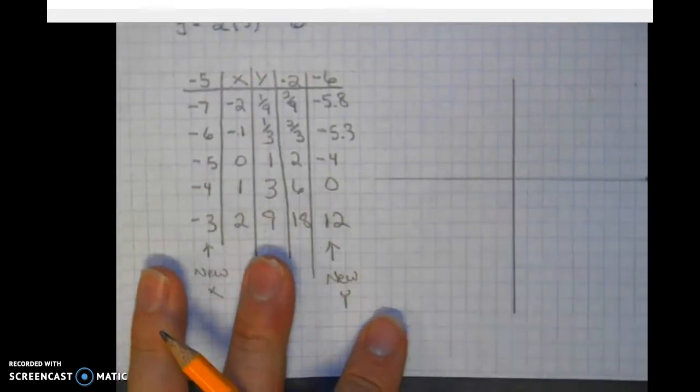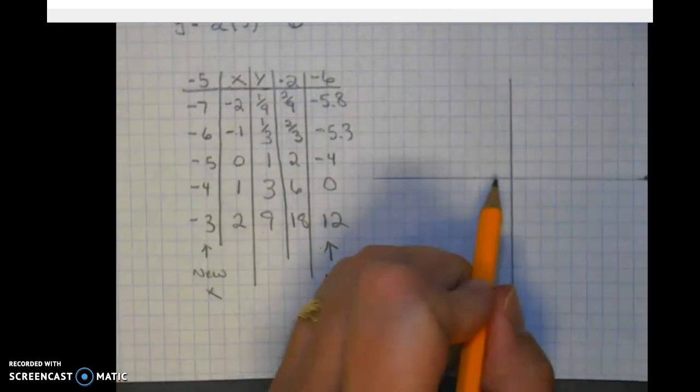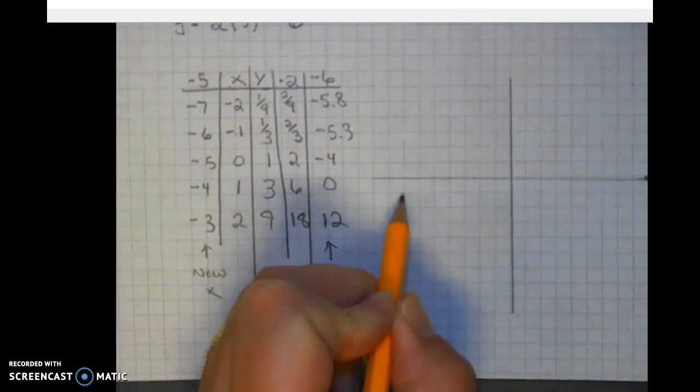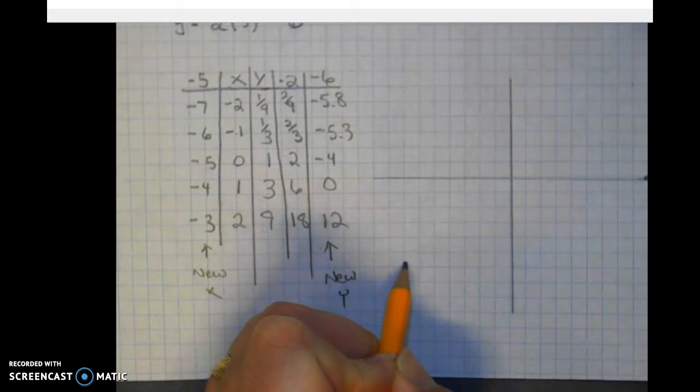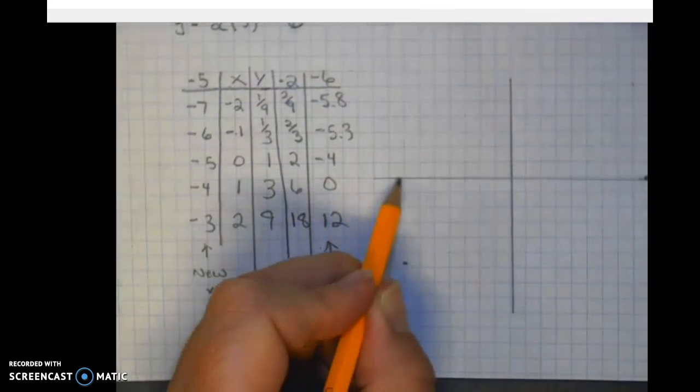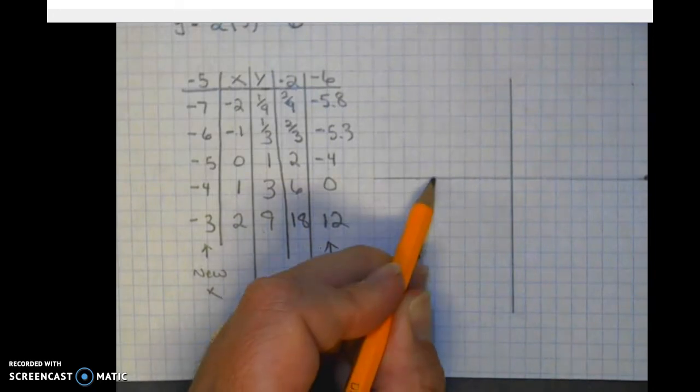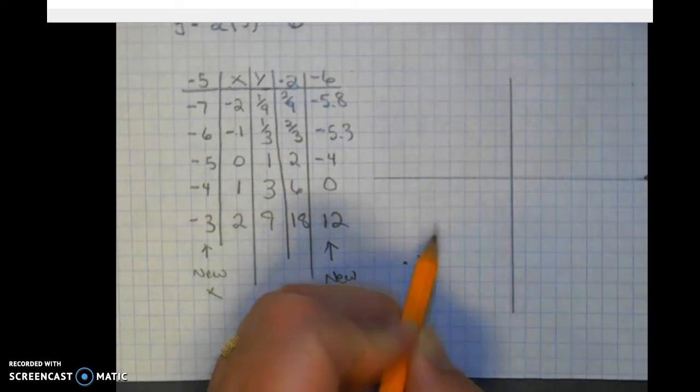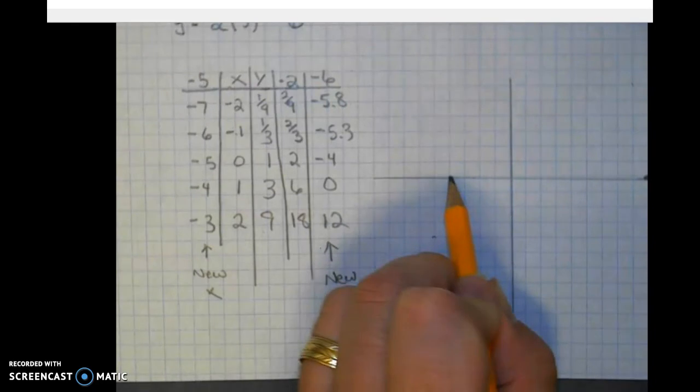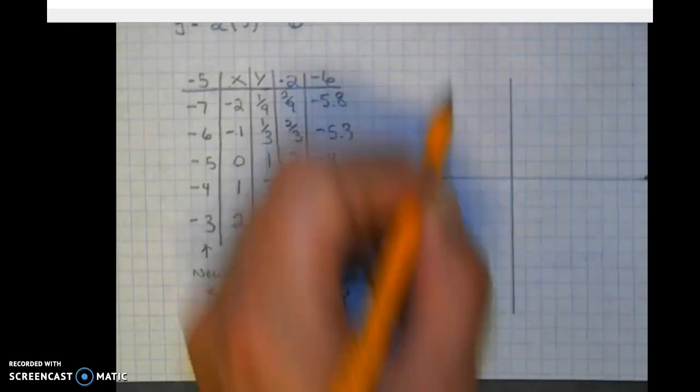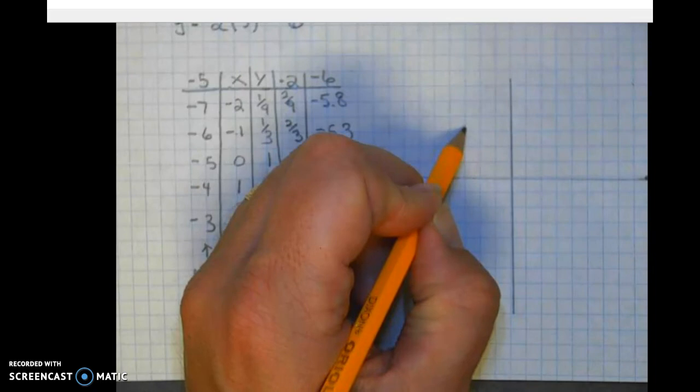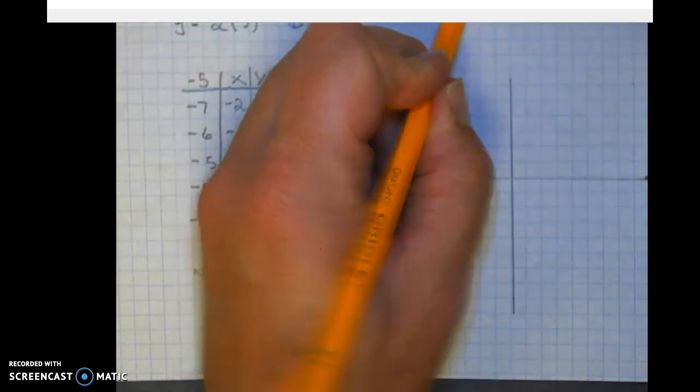So plotting the points. Negative seven, negative five point eight. Three, four, five, six, seven, one, two, three, four, five point eight. Then negative six, negative five point three. Negative five, negative four. Negative four, zero. And negative three, 12. So we're way up here. Three, six, nine, 12. You guys can't even see it. So high up there.